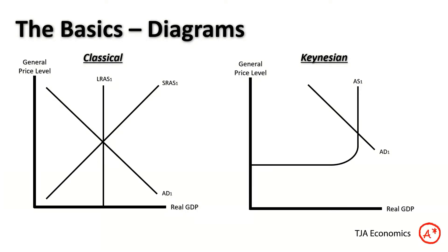On the left we've got our classical diagram, with macroeconomic equilibrium where LRAS, SRAS, and AD all intersect at that equilibrium, giving us PL1 and YFE — FE standing for full employment.